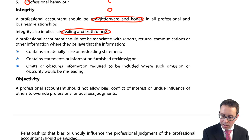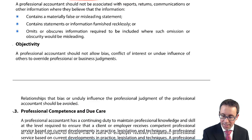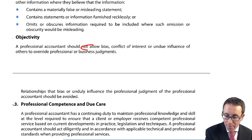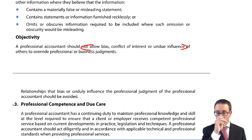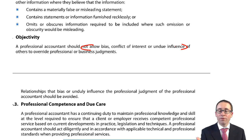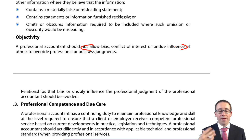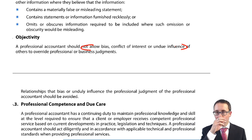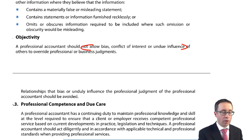With objectivity, you're not allowing any bias, conflict of interest, or any undue influence. Don't be persuaded — for example, if you're offered a bonus if profits reach a particular level and therefore you manipulate those profits, you are not being objective. You are operating with bias towards your own interests. Do not allow any undue influence, bias, or conflict of interest.